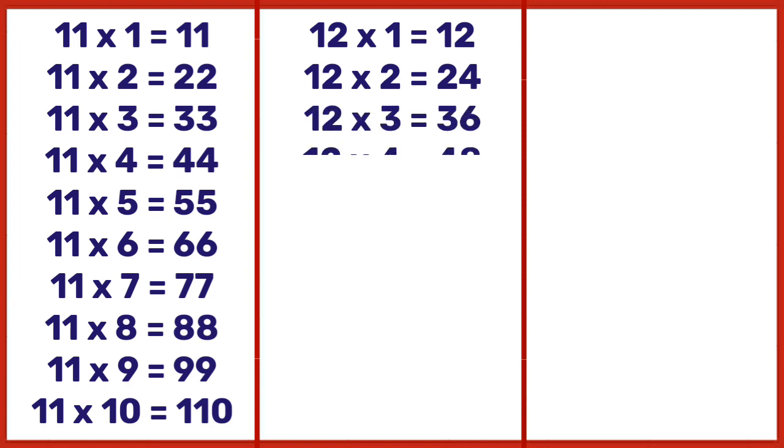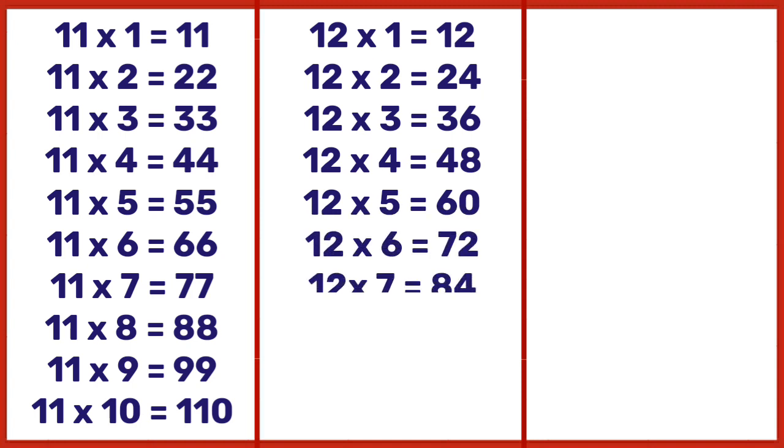12 ones are 12, 12 twos are 24, 12 threes are 36, 12 fours are 48, 12 fives are 60, 12 sixes are 72, 12 sevens are 84, 12 eights are 96.